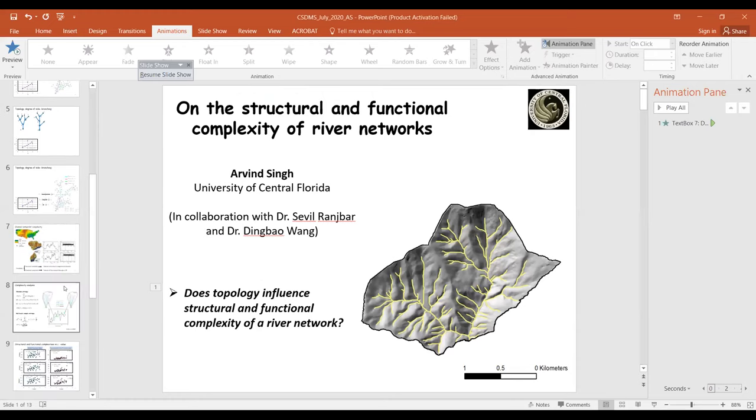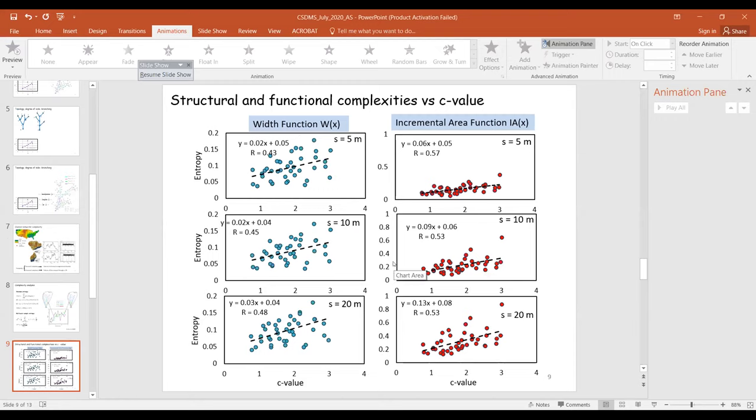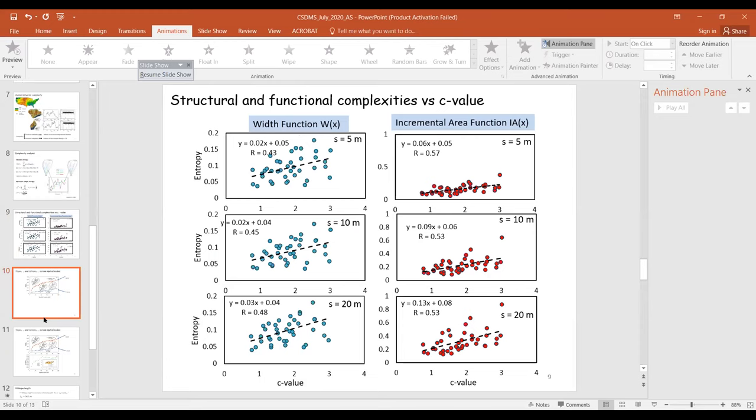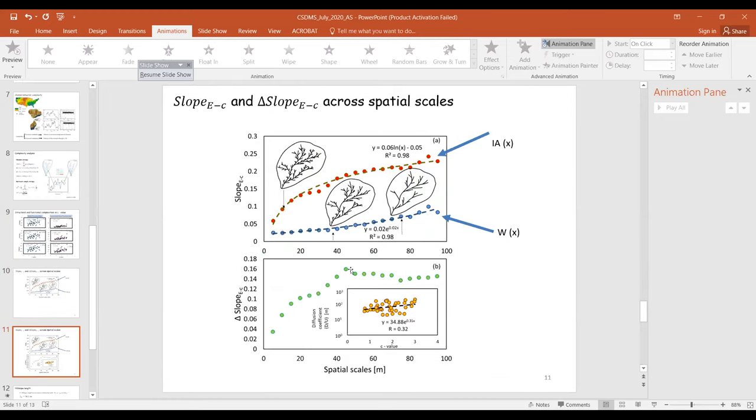Let me see. You're referring to this particular figure, right? This one? After 40 to 45 meters, there is no more added complexity to the system. So that's the maximum complexity you would add—it's at the hillslope length. Thank you.